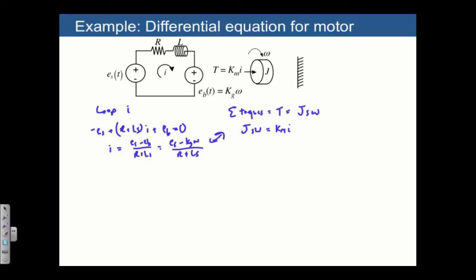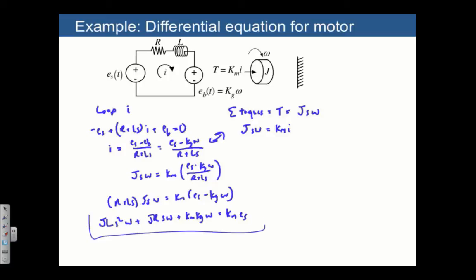Let's combine both of these, and what we end up with is Js omega equals Km times I, which is ES minus kg omega over R plus LS. We have R plus LS times Js omega equals Km times ES minus kg omega. Collecting all the terms, we get JLs squared omega plus JR times S omega plus Km kg omega equals Km times ES. So this is the differential equation for the electromechanical system.